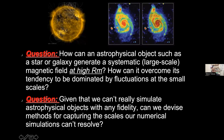My central question really is: how can an astrophysical object, such as a star or galaxy, generate a systematic magnetic field at high magnetic level? It's not really surprising that an astrophysical object can generate a magnetic field, but how can it generate a systematic magnetic field — how can it overcome its tendency to be dominated by fluctuations at small scales, which is what you might expect at high magnetic Reynolds number?